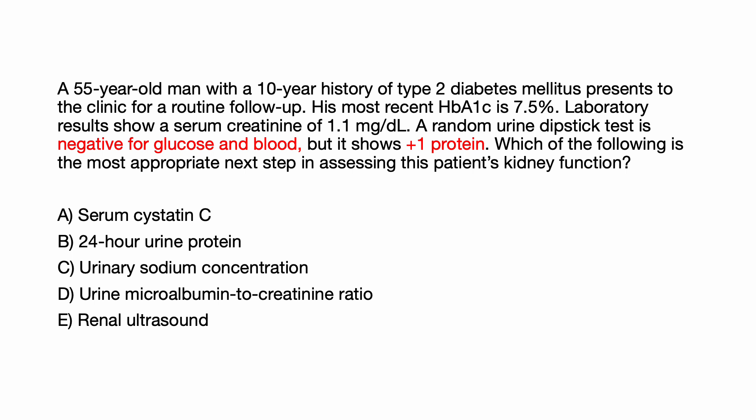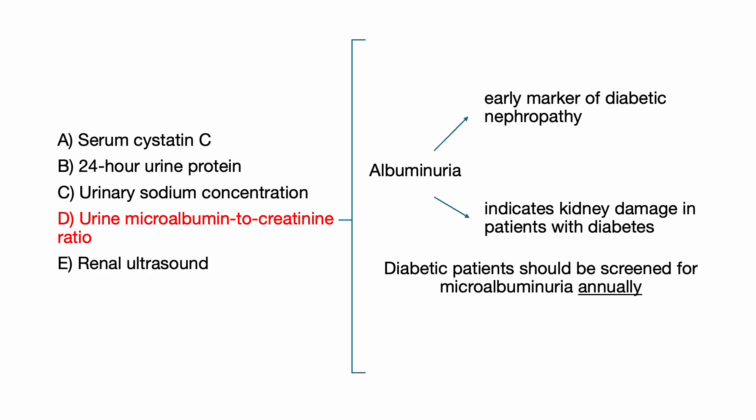Here's a 55-year-old man with a 10-year history of type 2 diabetes who presents to your clinic for a routine follow-up. His most recent A1c is 7.5%. Lab results show a serum creatinine of 1.1. A random urine dipstick is negative for glucose and blood but shows plus 1 protein. Which of the following is the most appropriate next step in assessing this patient's kidney function: serum cystatin C, 24-hour urine protein, urinary sodium concentration, urine microalbumin to creatinine ratio, or renal ultrasound? The correct answer is D, urine microalbumin to creatinine ratio.